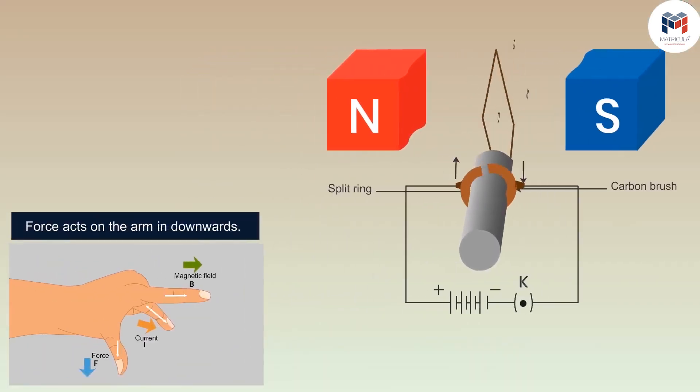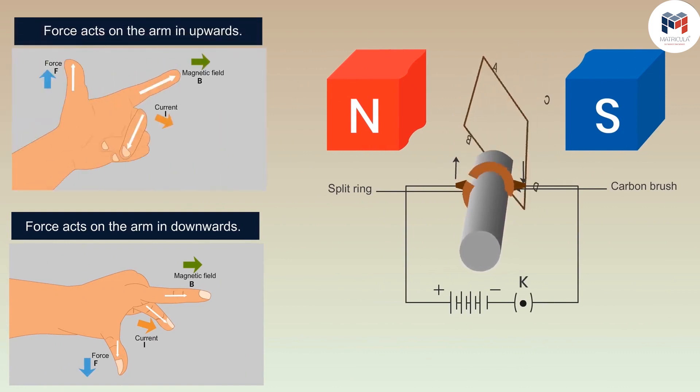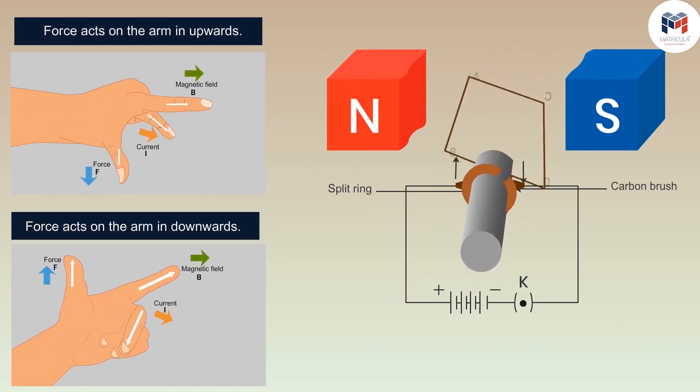When the current flows through the circuit then a force acts on the arm AB and CD in downwards and upwards direction respectively. After half the cycle the force acted on CD and AB in downwards and upwards direction respectively and the cycle repeats itself.